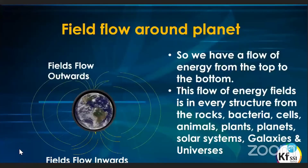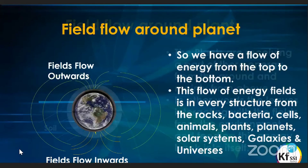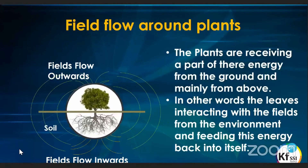We see this flow of energy everywhere — the same as the fields on our planet. This flow of energy is in every structure: the rocks, bacteria, cells, animals, and plants. From this we can say that plants are receiving a very small part of their energy from the fields in the ground, but the majority of the energy they use and need is from the environment above the soil, where all the leaves are interacting with the fields from the environment as huge reactors.